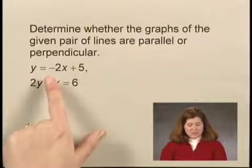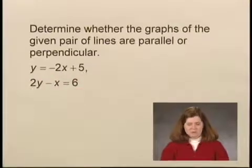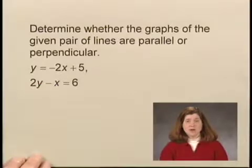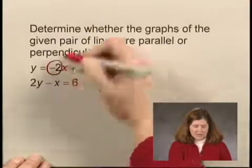The first equation, y equals negative 2x plus 5, is written in slope-intercept form. We can read the slope directly from this equation, and that is negative 2.